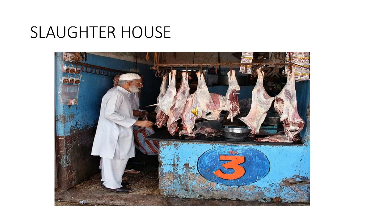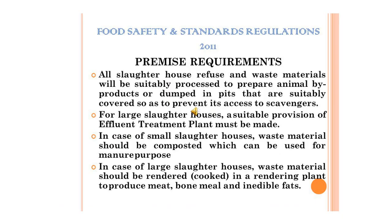Slaughterhouses are the places where animals whose flesh is intended for human consumption are cured. The hygiene of the slaughterhouse is of paramount importance to prevent the contamination of the meat during the process of dressing. Only minimum standards for slaughterhouses have been suggested according to the Public Health Act.